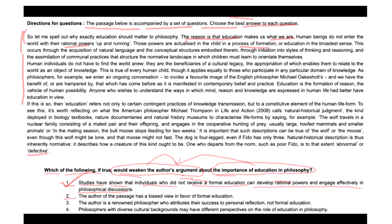The second option says: the author of the passage has a biased view in favor of formal education. This doesn't directly address the general argument about the importance of education in philosophy. It may question the author's personal bias, but it does not provide evidence to counter the broader argument about education and philosophy.